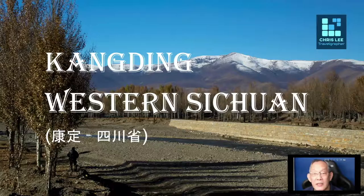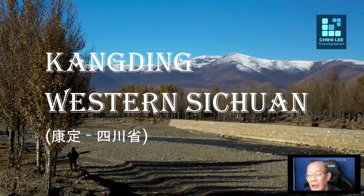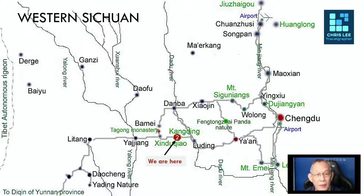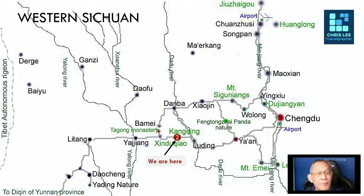The next stop is Kangding — a very interesting town, famous among Chinese for good reason. Kangding is also called Darzedo in Tibetan language. It is a county-level city and the capital of Ganzi Tibetan Autonomous Prefecture. Located in a deep valley with two rivers flowing through and surrounded by some of the highest mountains in Sichuan, it is about 280 kilometres west of Chengdu.